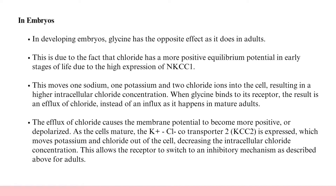In Embryos: In developing embryos, glycine has the opposite effect compared to adults. This is due to chloride having a more positive equilibrium potential in early stages of life due to the high expression of NKCC1, which moves one sodium, one potassium, and two chloride ions into the cell, resulting in a higher intracellular chloride concentration. When glycine binds to its receptor, the result is an efflux of chloride — causing the membrane to become depolarized. As cells mature, the potassium-chloride cotransporter 2 (KCC2) is expressed, moving potassium and chloride out of the cell, decreasing intracellular chloride concentration and allowing the receptor to switch to an inhibitory mechanism.